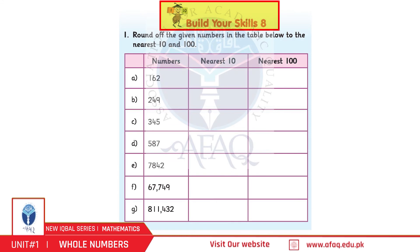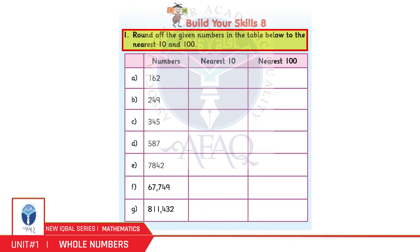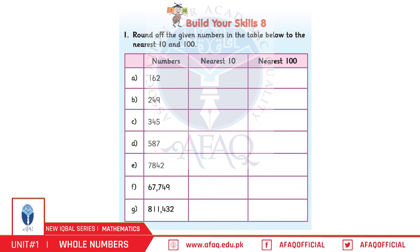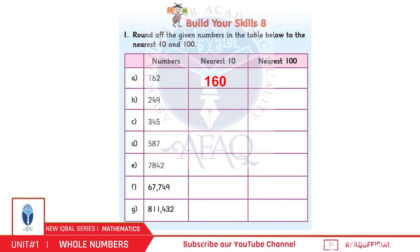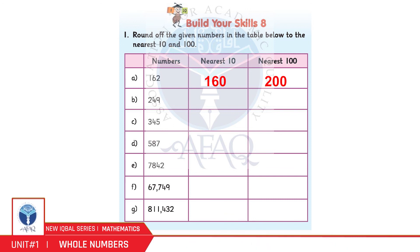Build Your Skills 8, Page 18. Question 1: Round off the given numbers to the nearest ten and hundred. A: 162 — nearest ten: 160; nearest hundred: 200. Good, you have done a great job!